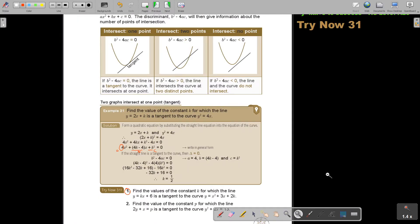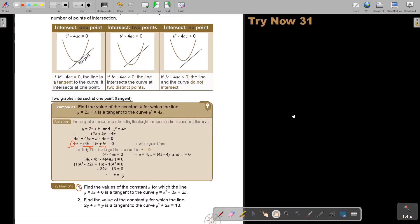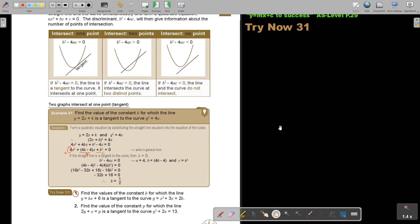Let's just make it smaller that there's space to write. Find the value of the constant K for which the line, and what is the line? It's number one. So this is equation 1, this is equation 2. I substitute 1 into 2. Substitute equation 1 into equation 2.